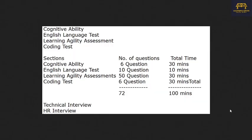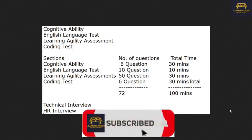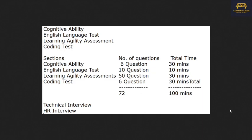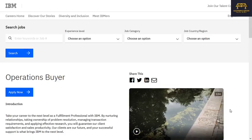Based on recent campus hiring for this Associate System Engineer role, the selection process includes a cognitive ability test, an English language test, learning agility assignments, and a coding test. I'm sharing this based on earlier recruitments, as the current hiring process hasn't been specifically detailed. Those who qualify the assessment will proceed to a technical interview followed by an HR interview.